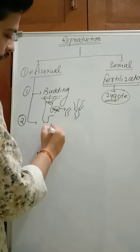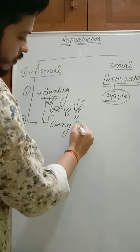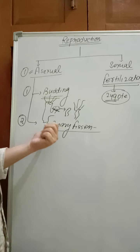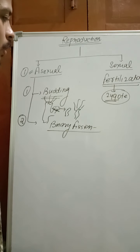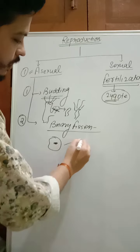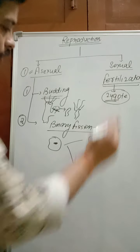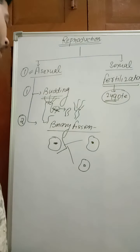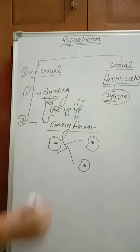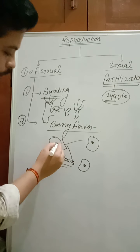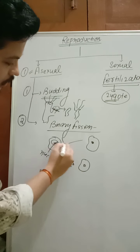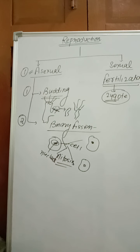The next type is binary fission. In this method of asexual reproduction, the parent cell is divided into two daughter cells which are identical to the parent. That process is called binary fission. In binary fission, mitotic division takes place — first the nucleus divides and then the cell divides. This process is mainly present in unicellular organisms like bacteria, amoeba, paramecium, and euglena.